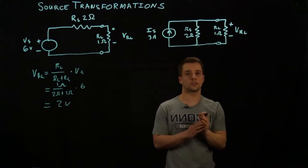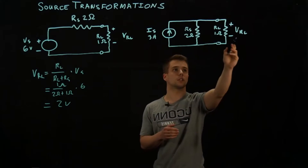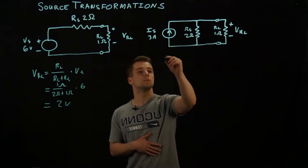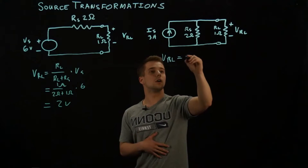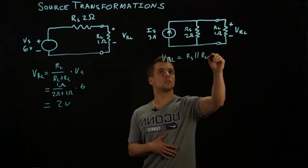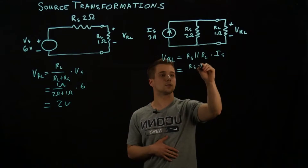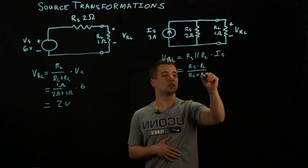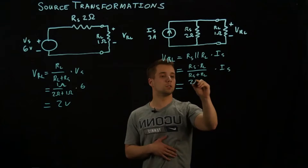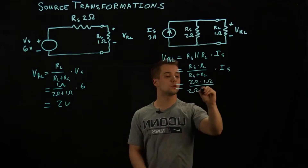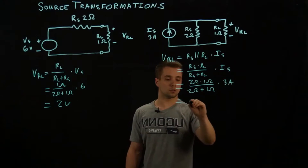And for this one we have to do something a little more complicated. We have to find the equivalent resistance because these are in parallel. Then we can multiply that times the current source to get the voltage over the resistor. So VRL is equal to RS in parallel with RL times IS, which is RS times RL over RS plus RL times IS. That's 2 times 1 over 2 plus 1 times 3 amps, and this also gives us 2 volts.